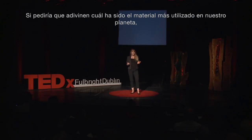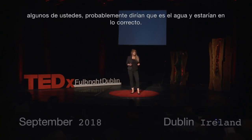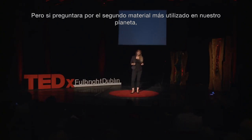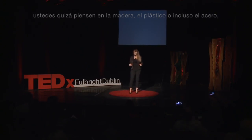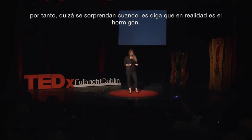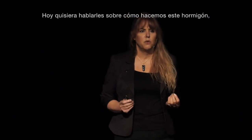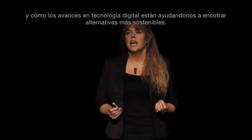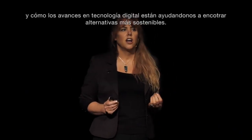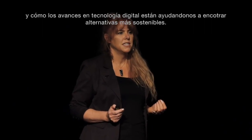If I were to ask you to guess what the most commonly used material was on our planet, some of you would probably say water, and you'd be right. But if I were to ask you what you thought was the second most commonly used material on our planet, you might think timber, or plastic, or even steel. So you'll probably be surprised when I tell you that it is in fact concrete. Today I would like to talk to you about how we make this concrete, the impact that this is having on our planet, and how advances in digital technologies are helping us to find more sustainable alternatives.